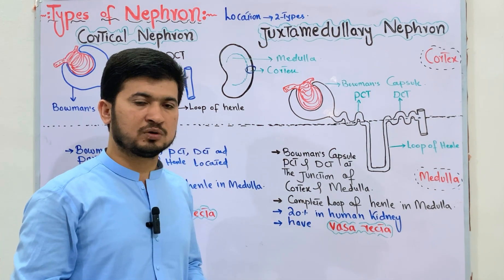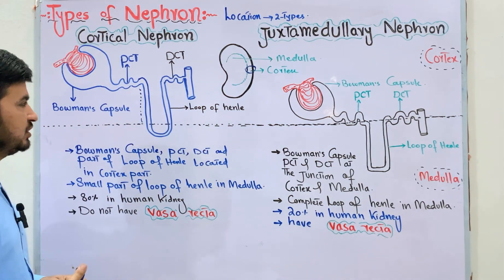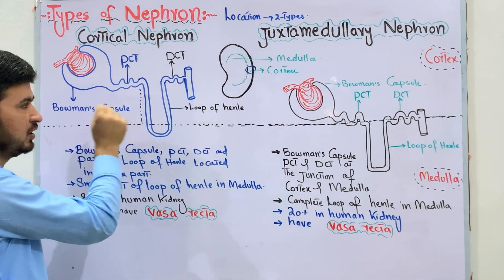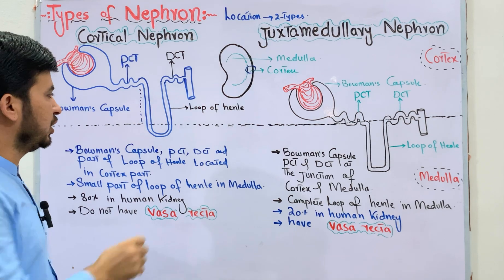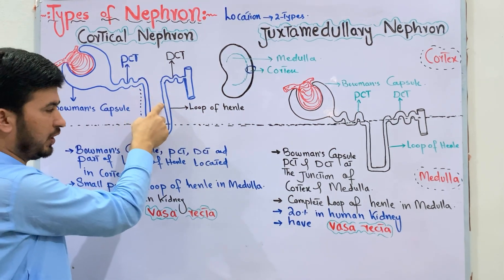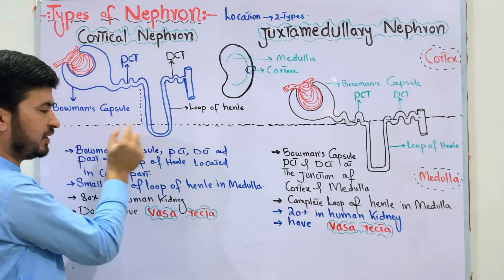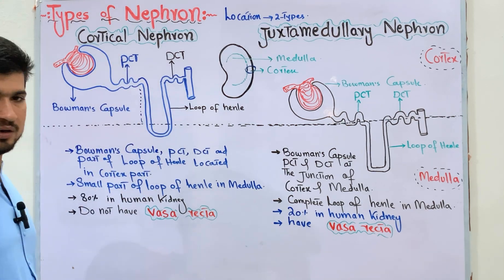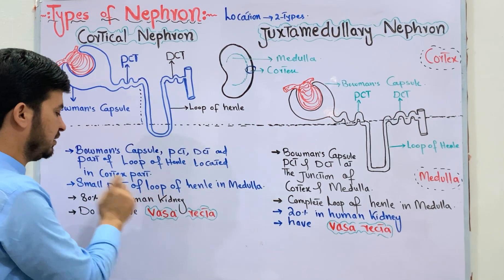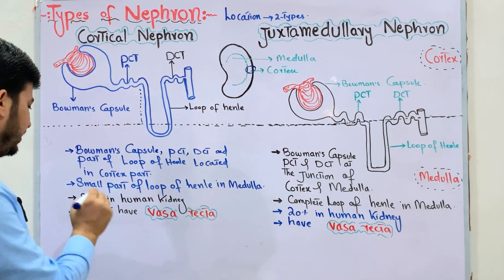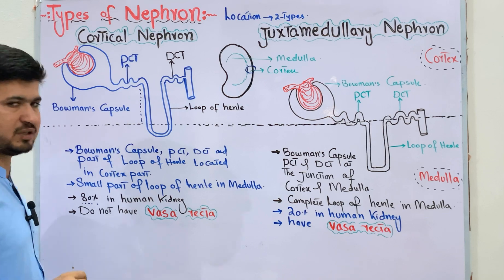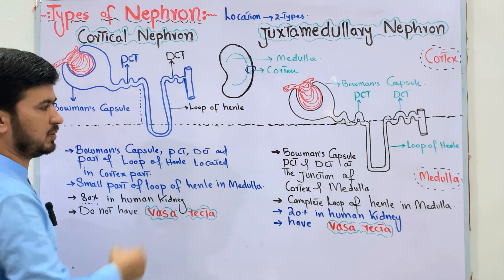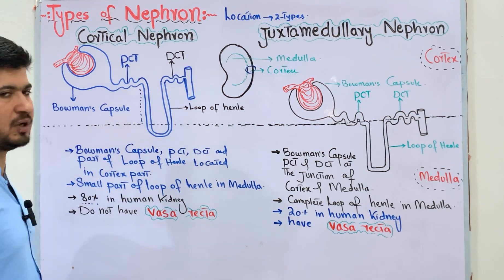The main part of the cortical nephron is located in the cortex region. The Bowman's capsule, proximal convoluted tubule, and the major part of the loop of Henle are in the cortical region, with only a small part of the loop in the medullary region. In the human kidney, 80% of nephrons are cortical nephrons. In the cortical nephron, vasa recta is absent.